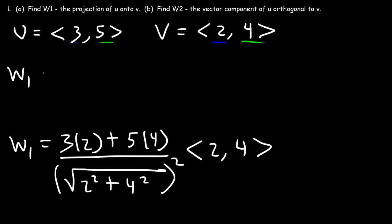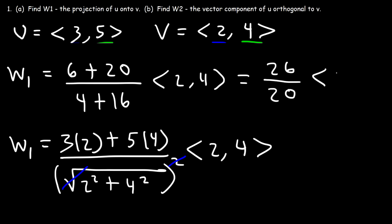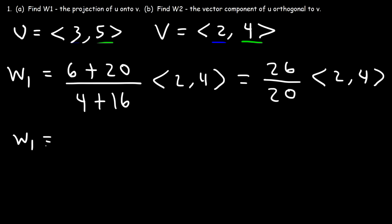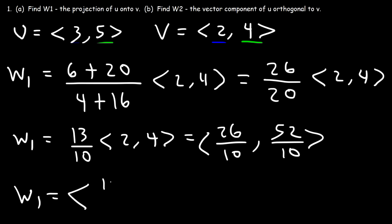Now let's perform the operation. We have 3 times 2, which is 6, and 5 times 4 is 20. The square cancels the square root: 2 squared is 4, 4 squared is 16. Then 6 plus 20 is 26, and 4 plus 16 is 20. We can reduce that fraction by dividing the numerator and denominator by 2, so 26 over 20 becomes 13 over 10. Then 13 times 2 is 26 and 4 times 13 is 52. We can also reduce those fractions: 26 over 10 reduces to 13 over 5, and 52 over 10 reduces to 26 over 5.